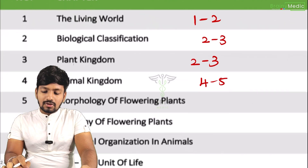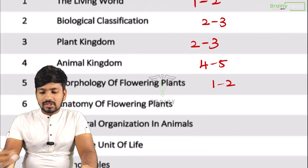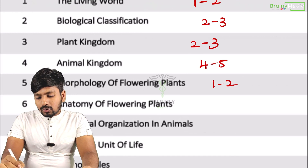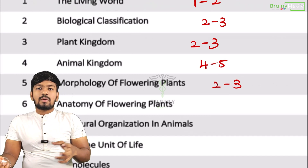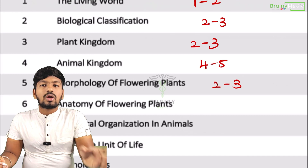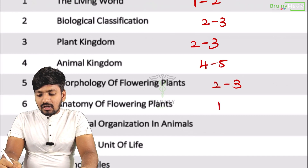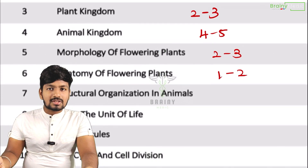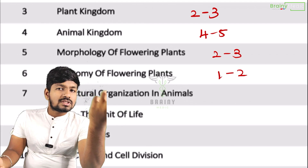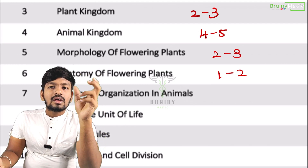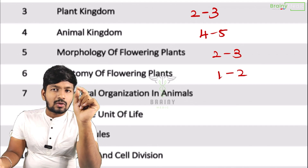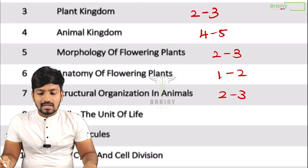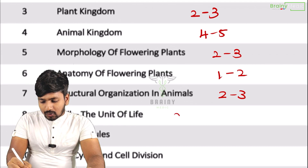Morphology of flowering plants is a small chapter with one to two questions. Anatomy of flowering plants has one to two, sometimes two to three questions — maximum three chances. Structural organization in animals has two to three questions. Cell: unit of life also has two to three questions.